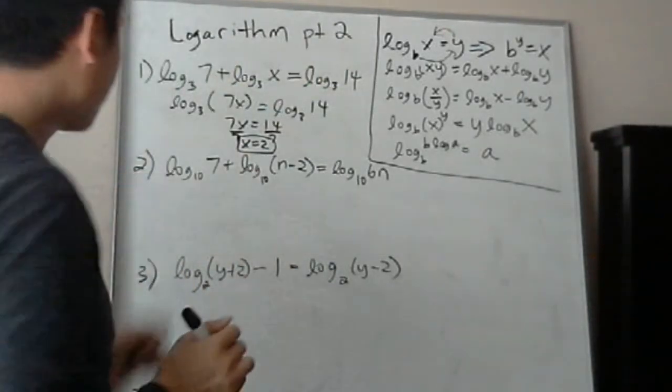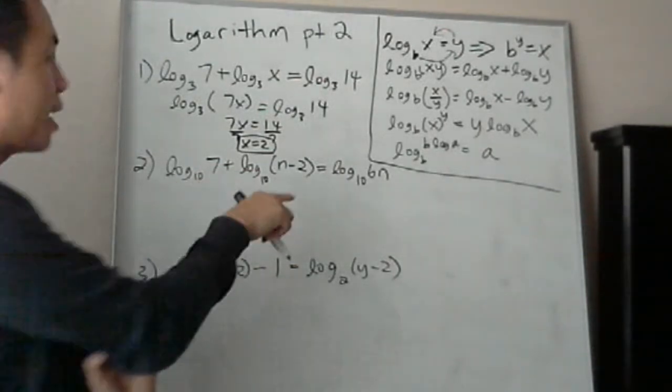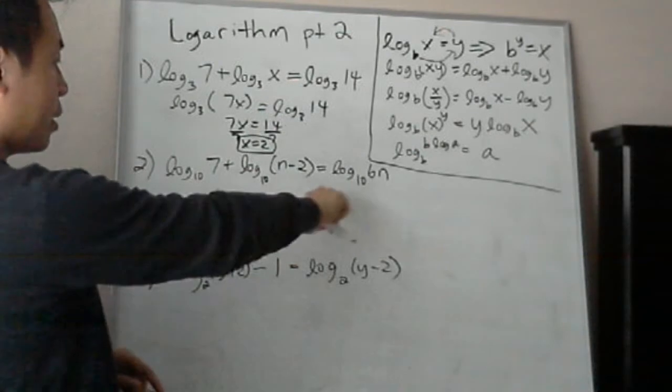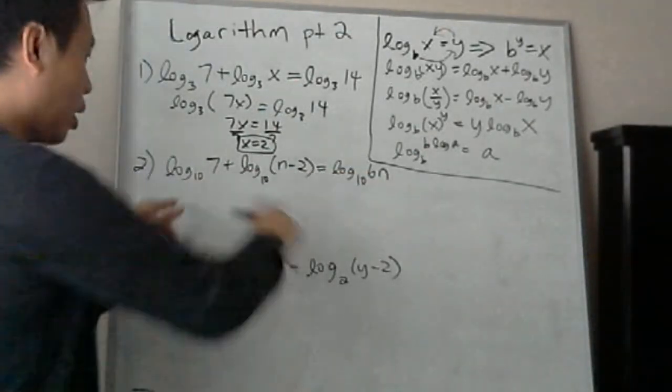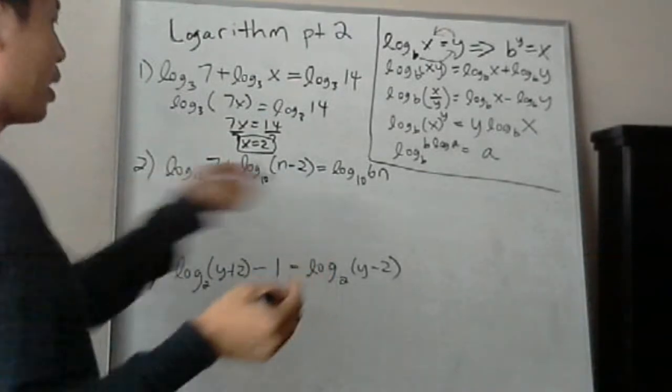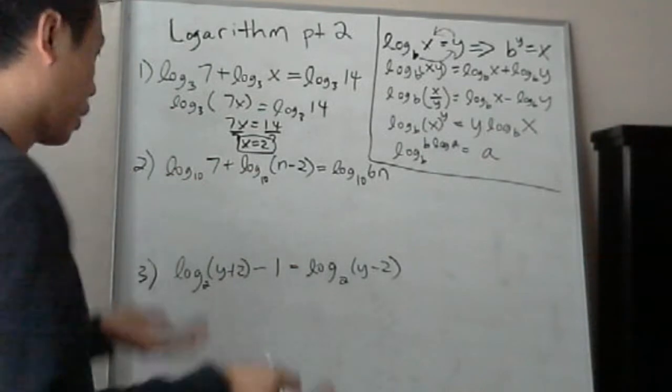So number 2, you have log base 10, 7, plus log base 10, parentheses, n minus 2, equals to log base 10, 6n. So same thing. All the bases are the same, so you don't have to worry about it. I mean, if you can say 10, it can say a million. It doesn't really matter if the bases are all the same for this problem.